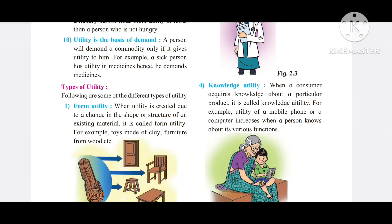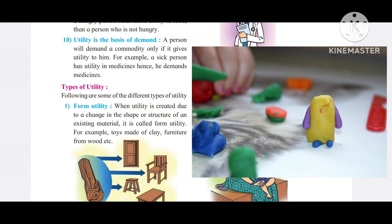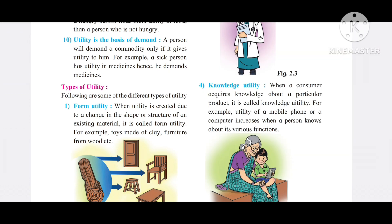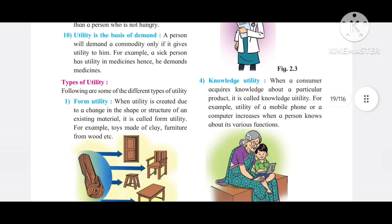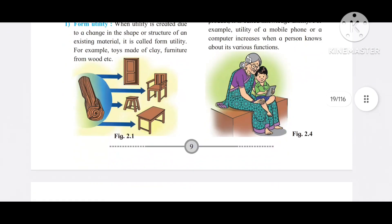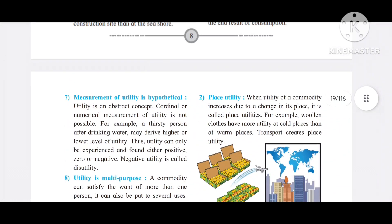Another example: toys made of clay. When we take clay and shape it into toys, or take wood and craft objects from it, utility is created through the change in form.